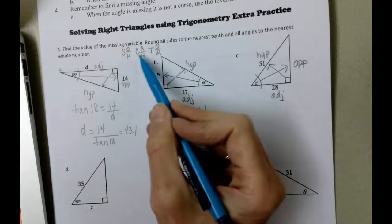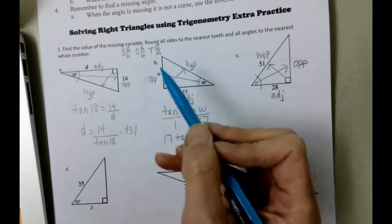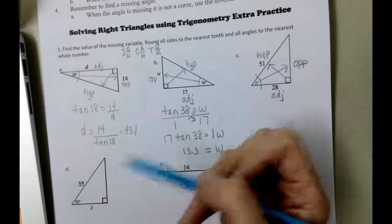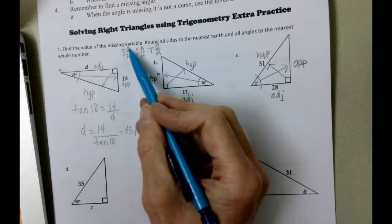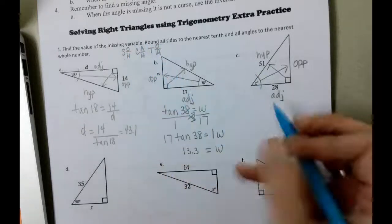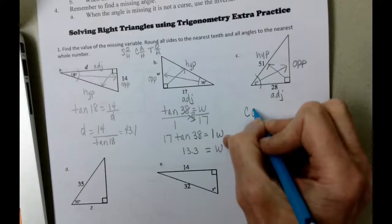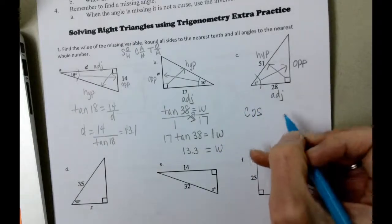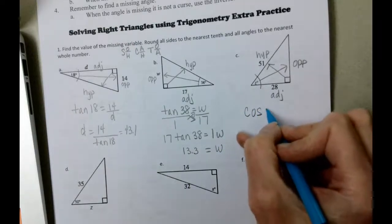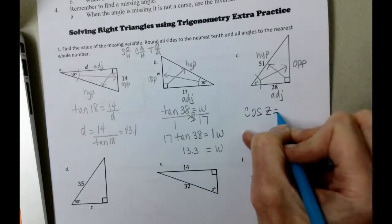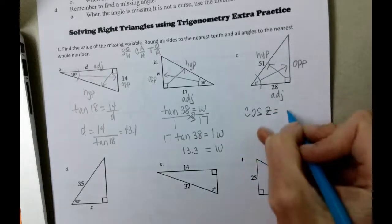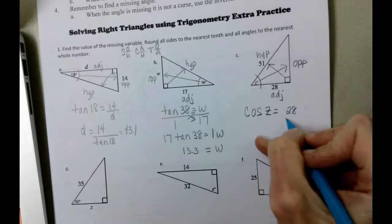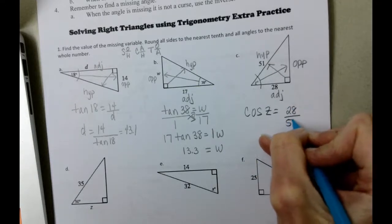We've got to pick a function that doesn't have opposite in it. Sine has opposite in it. Tangent has opposite in it. This means that we need to use cosine. So the cosine of Z is going to be the adjacent length, which is 28, divided by the hypotenuse, which is 51.